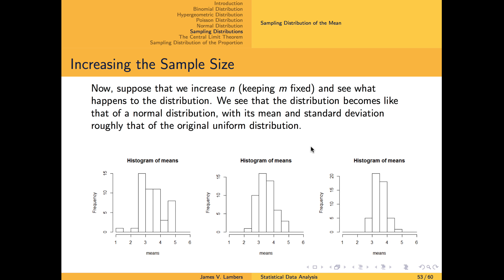Now let's try again with increasing sample sizes. As the sample size n increases to 5, then 10, then 20, we find that the sampling distribution of a mean becomes more like a normal distribution — bell-shaped, more symmetric, and centered around the mean of the original experiment, 3.5.